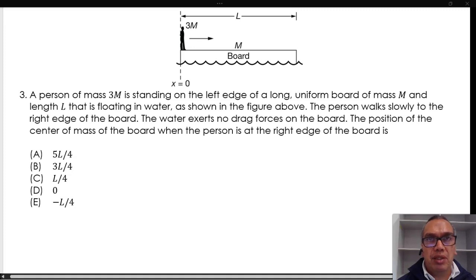A person of mass 3m is standing on the left edge of a long, uniform board of mass m and length l that is floating in water, as shown in the figure above. The person walks slowly to the right edge of the board. The water exerts no drag forces on the board. The position of the center of mass of the board when the person is at the right edge of the board is...